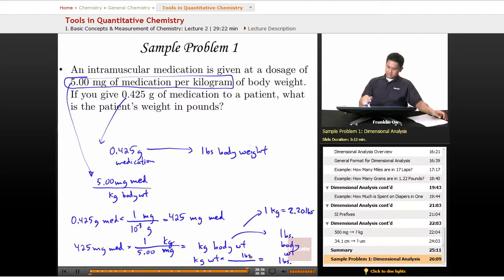So pounds goes upstairs, kg goes downstairs, and that's 2.20 divided by 1. And when all is said and done, we should get an answer of 187 pounds using the correct number of sig figs.